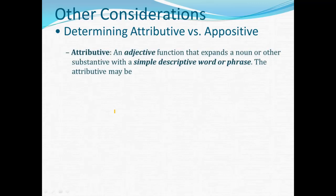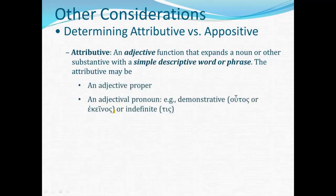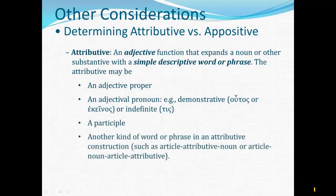An attributive is an adjective function that expands a noun or other substantive with a simple descriptive word or phrase. That attributive may be an adjective proper, or it may be an adjectival pronoun like the demonstrative pronouns hutos or ekeinos — 'this' or 'that.' The indefinite pronoun, 'a certain one,' is often construed as a simple modifier for a noun. Participles are very often attributive. And sometimes there's a completely different kind of word or phrase in an attributive construction, such as article–attributive–noun, or article–noun–article–attributive, where the attributive might expand into quite a long phrase. These are adjective functions supplying a simple description of the noun they modify.